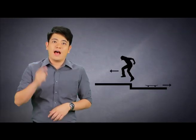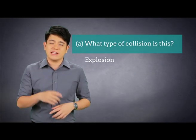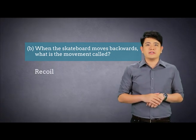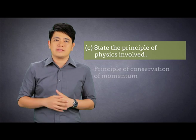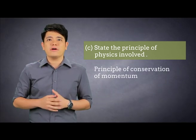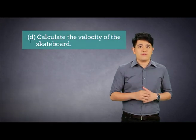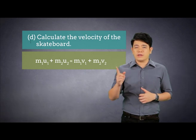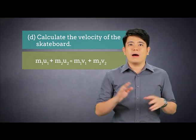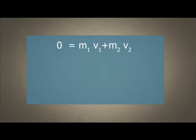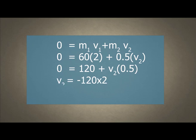To answer part A, we have to realise that before the boy jumps, both bodies are stationary. After he jumps, both bodies move in opposite directions. This is clearly an explosion. For part B, the movement is called recoil — similar to when you fire a gun. For part C, the answer is the principle of conservation of momentum. For part D, using the formula MU plus MU equals MV plus MV, the initial velocity of the boy and the skateboard are both 0 because they are stationary. So the left-hand side of the equation is 0. On the right-hand side, substitute M1 with the mass of the boy of 60 kg and V1 with the velocity of 2 m per second. The negative velocity shows that the skateboard is moving backwards.